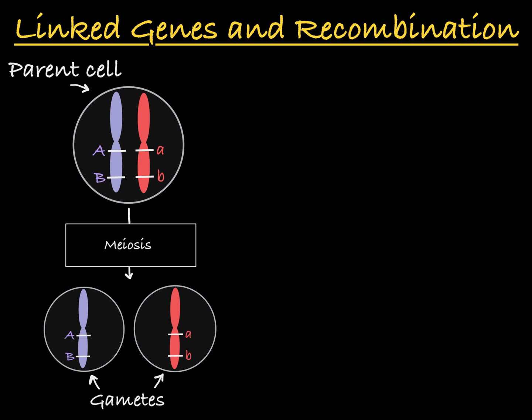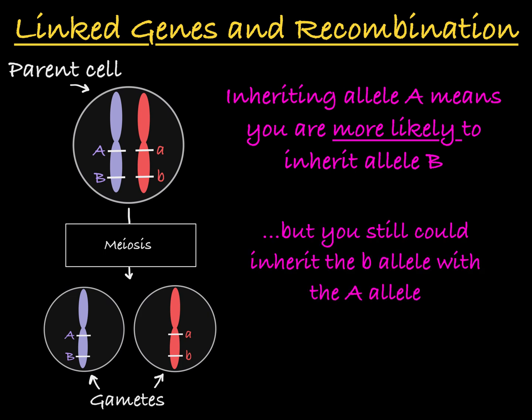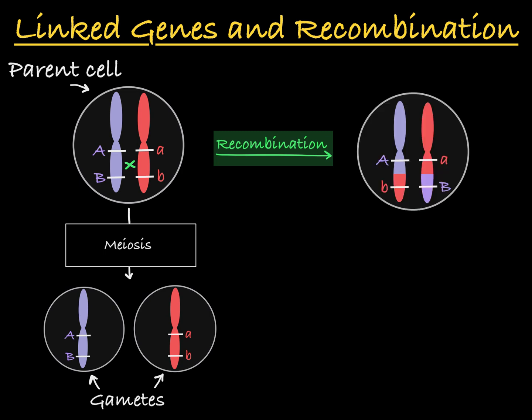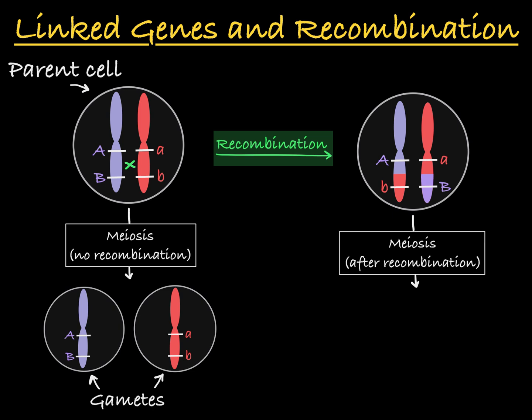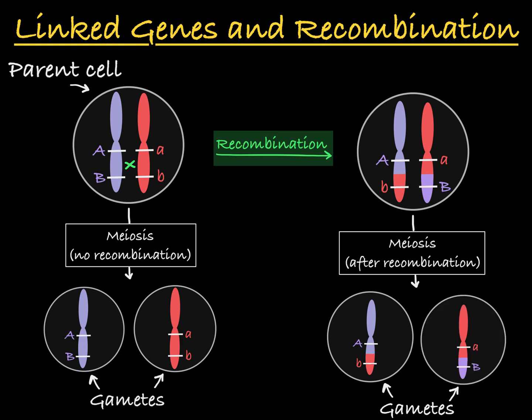Let's add one additional wrinkle. In this scenario, if you inherit the dominant allele for gene A, it makes you more likely to inherit the dominant allele of gene B, but this does not happen all the time. In meiosis, the process of crossing over or recombination occurs, causing portions of homologous chromosomes to rearrange. This means that crossing over could occur between gene A and gene B, separating the linked alleles. If crossing over occurred in this case, the organism would pass down the dominant allele of gene A with the recessive allele for gene B, and the recessive allele of gene A would move into a gamete with the dominant allele of gene B.